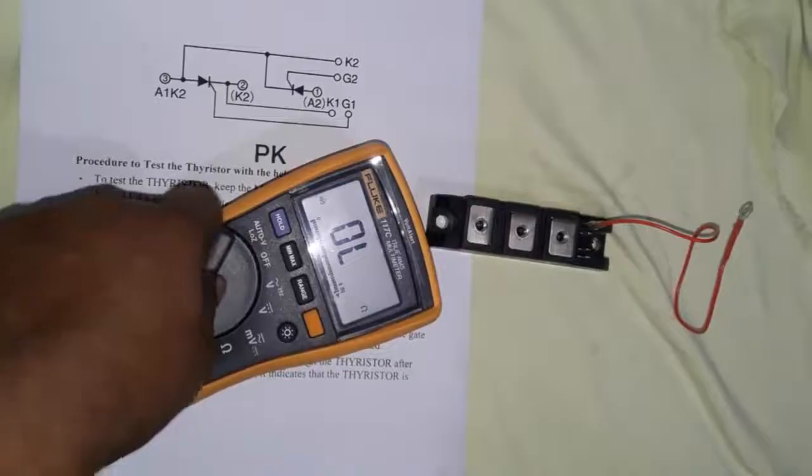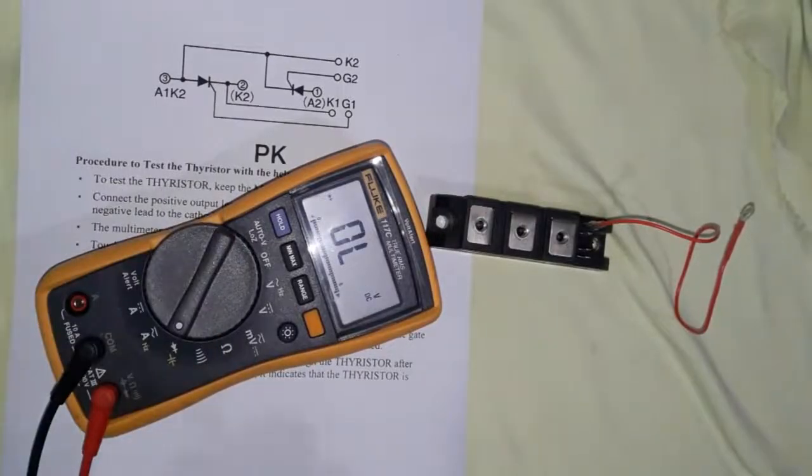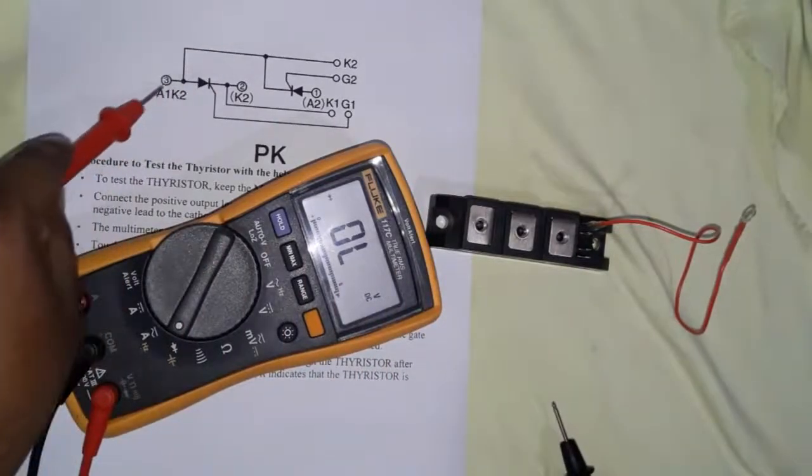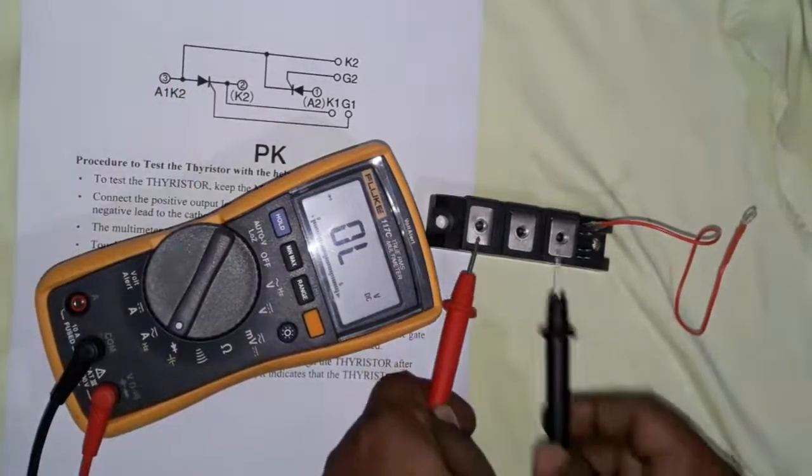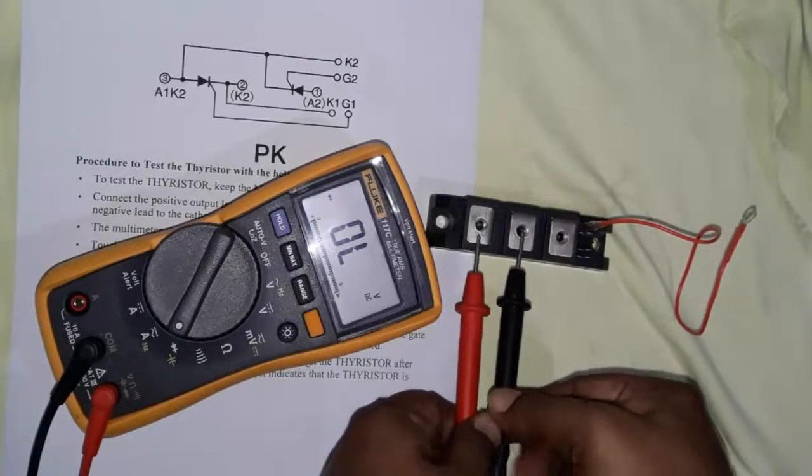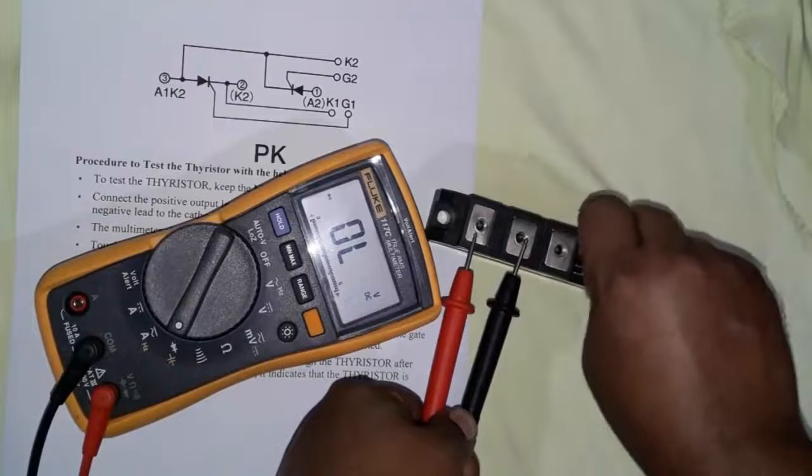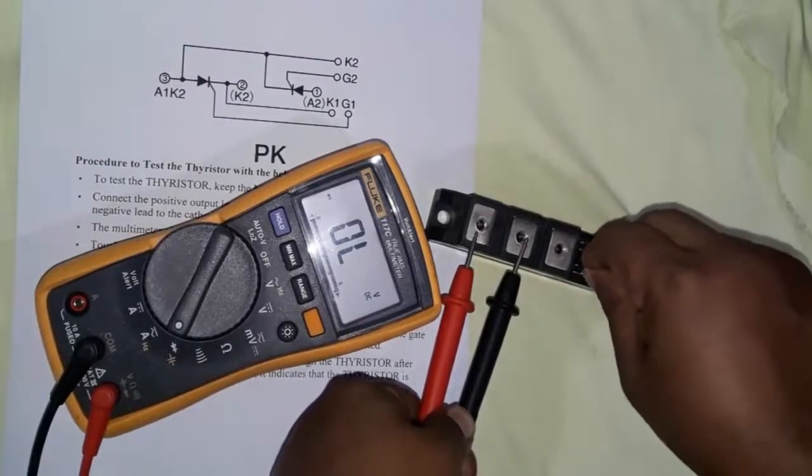We set the meter to diode mode. Same as before, we use the red probe for anode and black probe for cathode. We touch gate one with a red wire connected to the anode terminal.